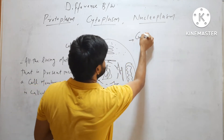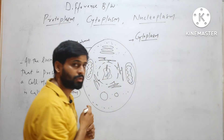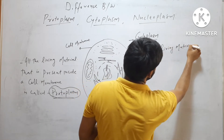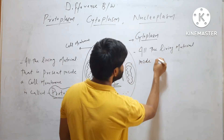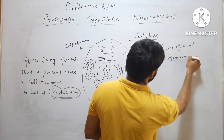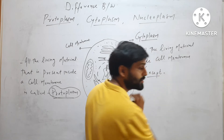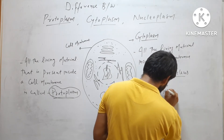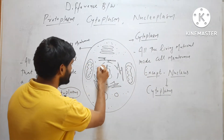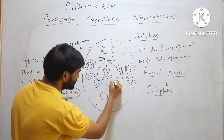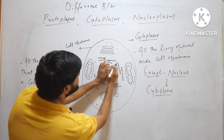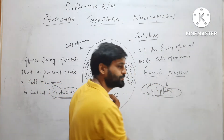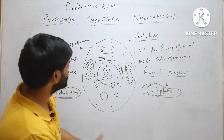Now, what is cytoplasm then? All the living material inside the cell membrane, except the nucleus — all the material that is present inside the cell membrane except the nucleus — will be called cytoplasm. And all material including the nucleus will be called protoplasm.